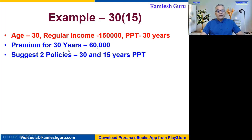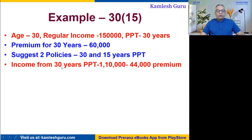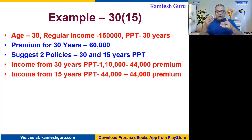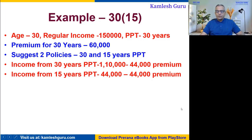Instead of one policy with a regular income of 1,50,000, we suggest two policies — one with a 30-year PPT and one with a 15-year PPT. The income from the 30-year PPT policy will be 1,10,000 rupees, with a premium of approximately 44,000. The second policy of 15-year PPT is structured to give a tax-free income of 44,000, which is sufficient to pay the premium of the 30-year PPT policy.